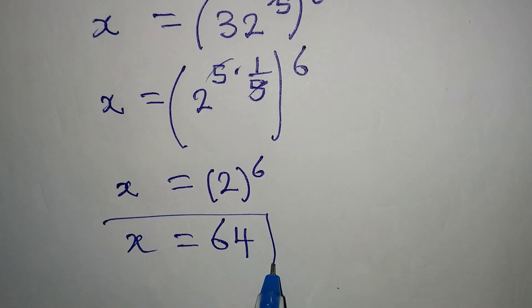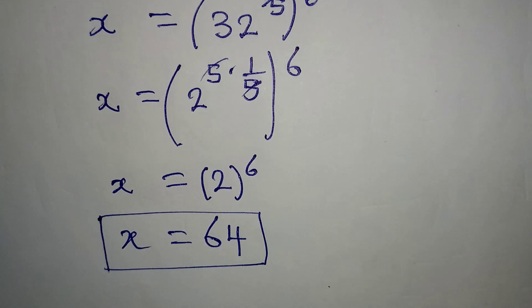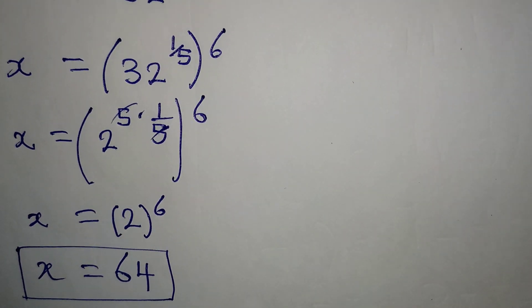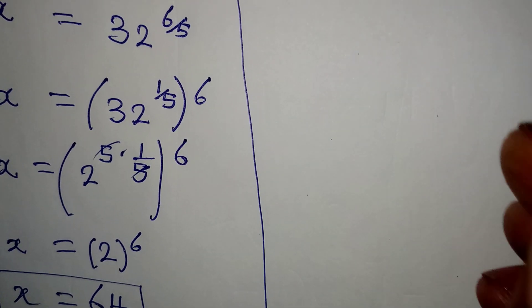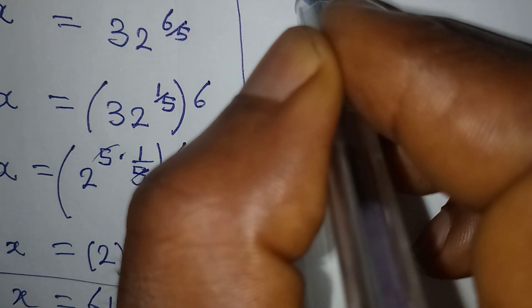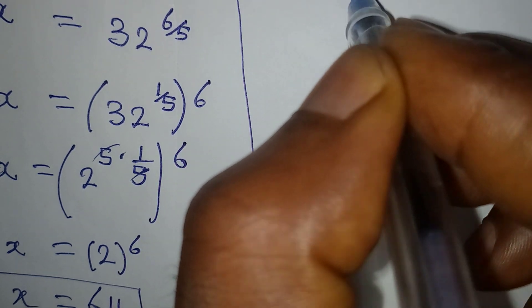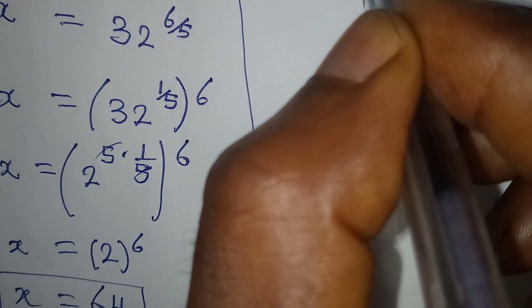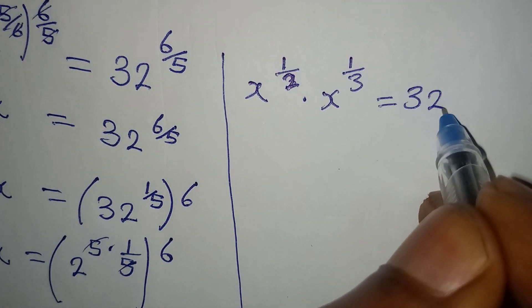But I would like us to put it back into the problem and confirm our work. Now, let me do it on this side. The original equation is x to the power of 1 over 2 multiplied by x to the power of 1 over 3 equal to 32.